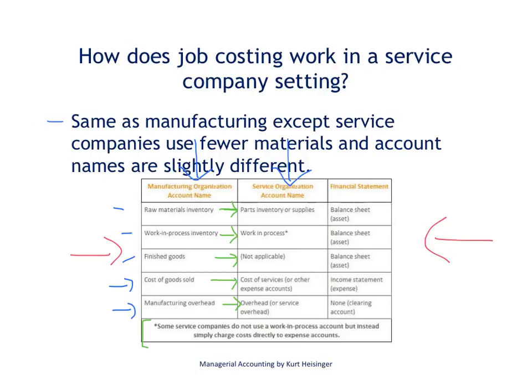The primary difference is that service organizations still use a job costing system and still track costs for each individual job or client — for example, in an accounting firm. But they do not use the finished goods inventory account, and they use different names for some of these other accounts.